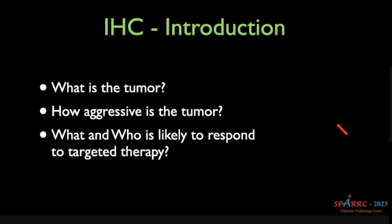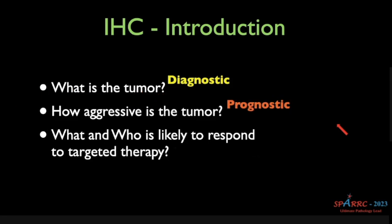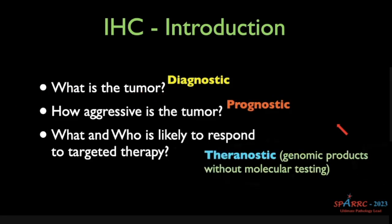Immunohistochemistry answers three questions: what is the tumor, how aggressive is the tumor, and who is likely to respond to targeted therapy. Accordingly, markers can be classified as diagnostic markers, prognostic markers, and theranostic markers. Theranostics is a new area where pathologists will play a vital role in telling which patient will respond to what medicine.